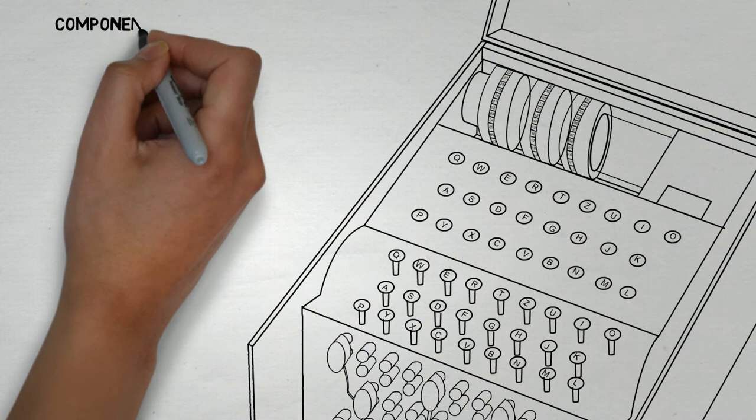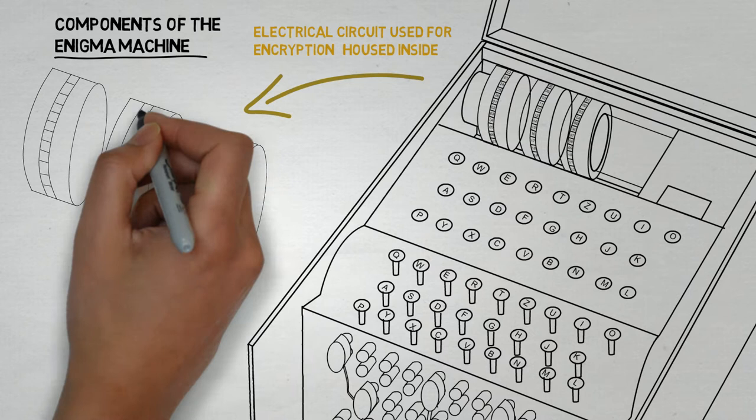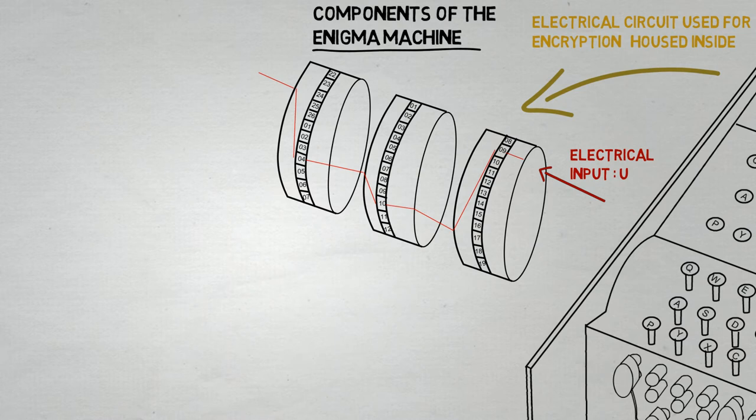In order to see how the Enigma machine is able to do such clever substitutions, we shall now take a closer look at its components. The electrical circuits of the machine are sheltered in a set of three rotors. When a button is pressed, say the U button, the circuits will encode it and give an output G.